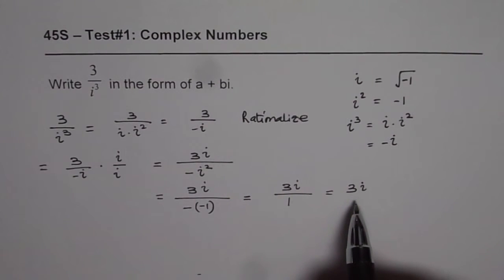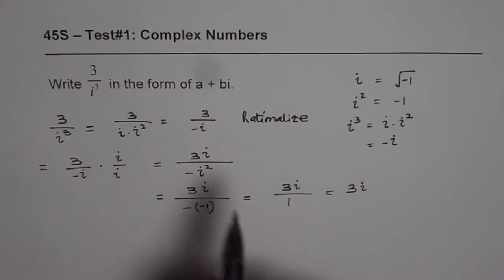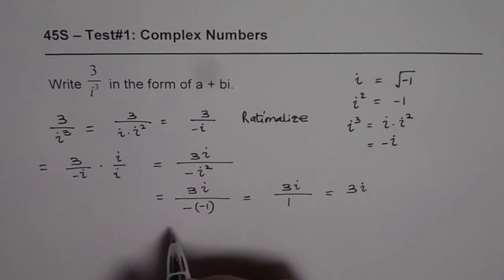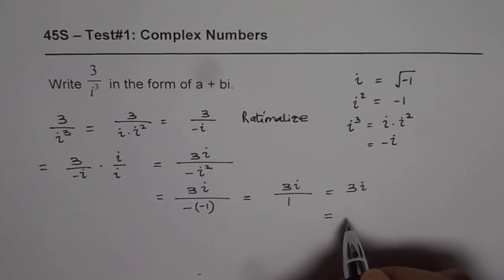So what we get here is a pure imaginary number, 3i. So in this form, if you have to write, 3i is also in this form, but to be very specific, we could write this as 0 plus 3i.